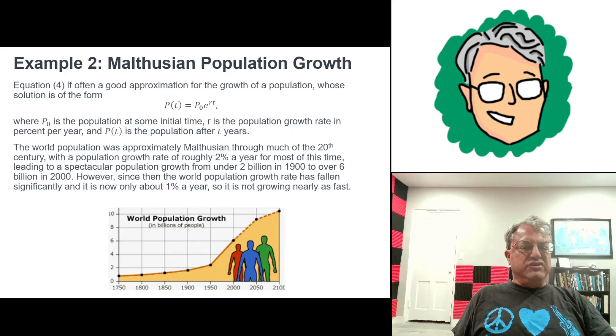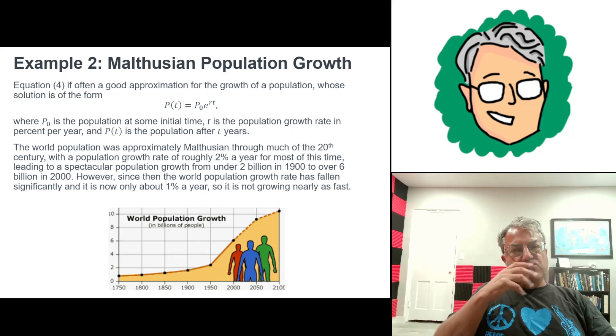I think it was around 2.1% a year in 1962. It was around 2% for most of the 20th century. And as a result, the world population grew quite a bit in the 20th century.